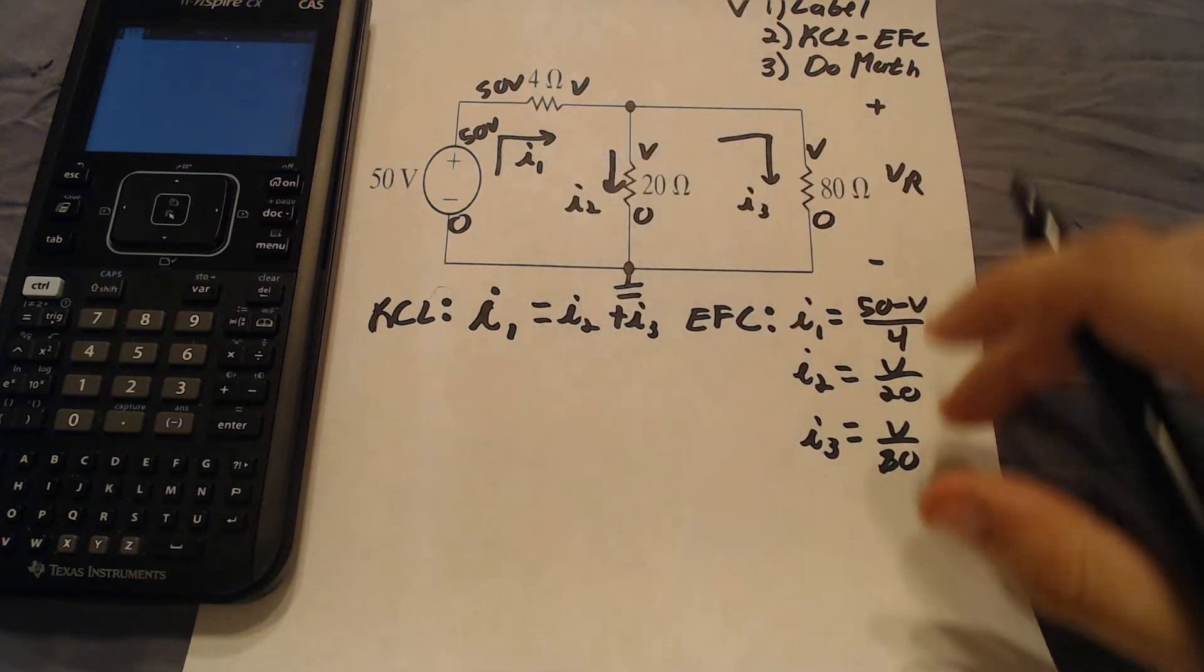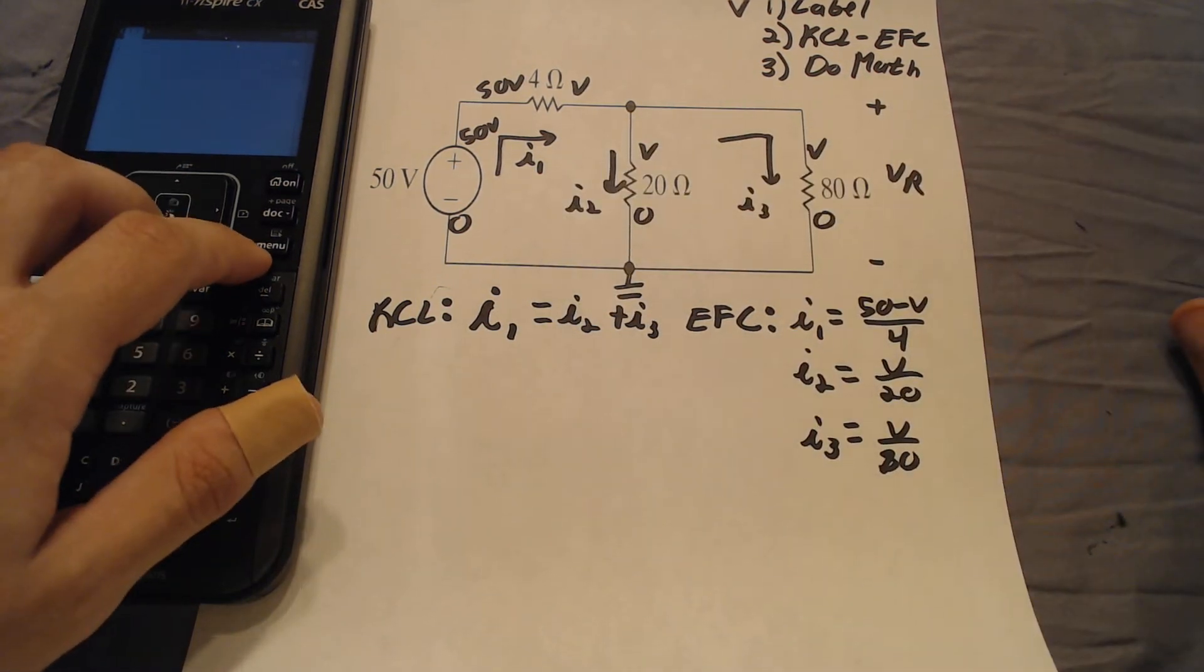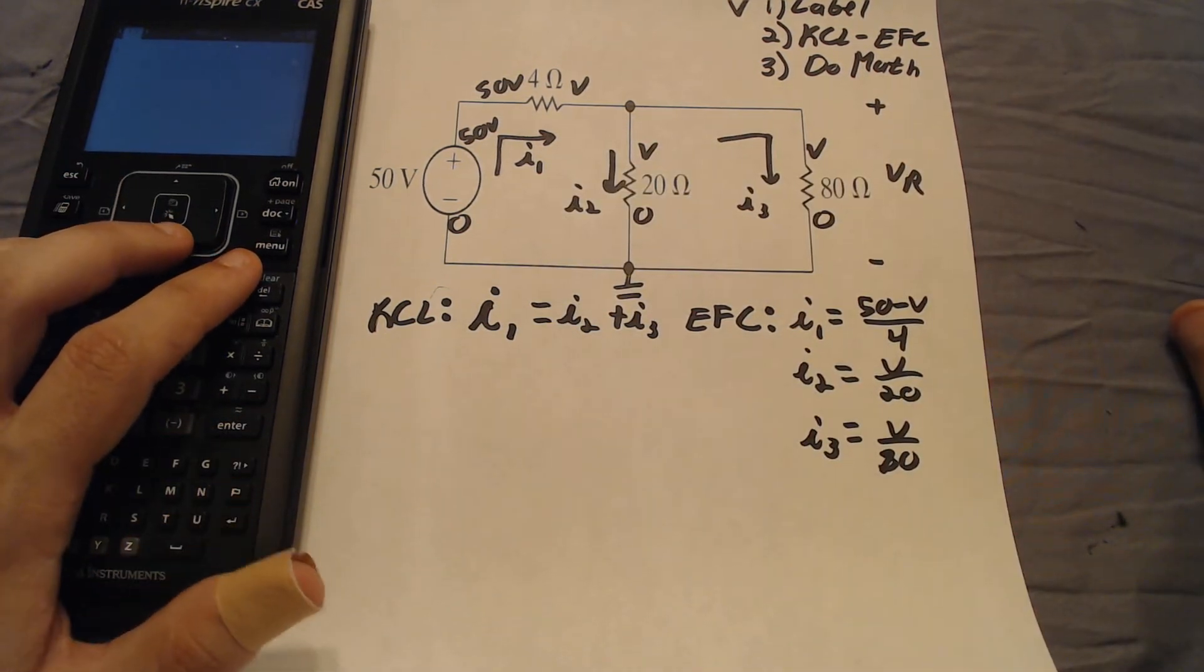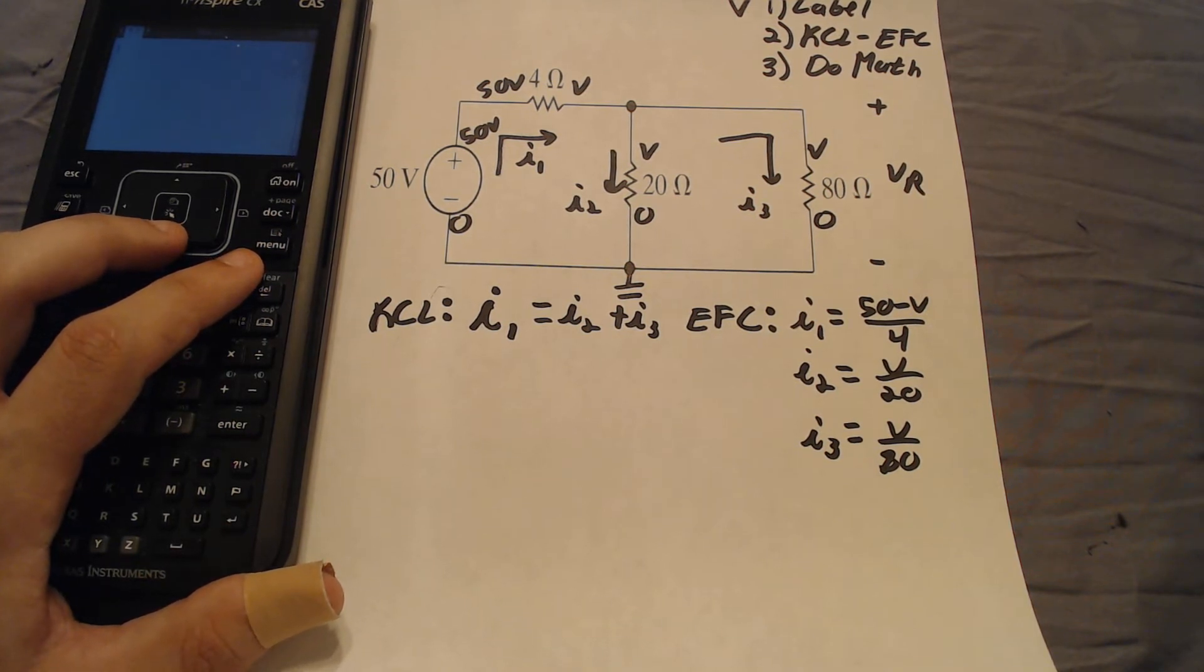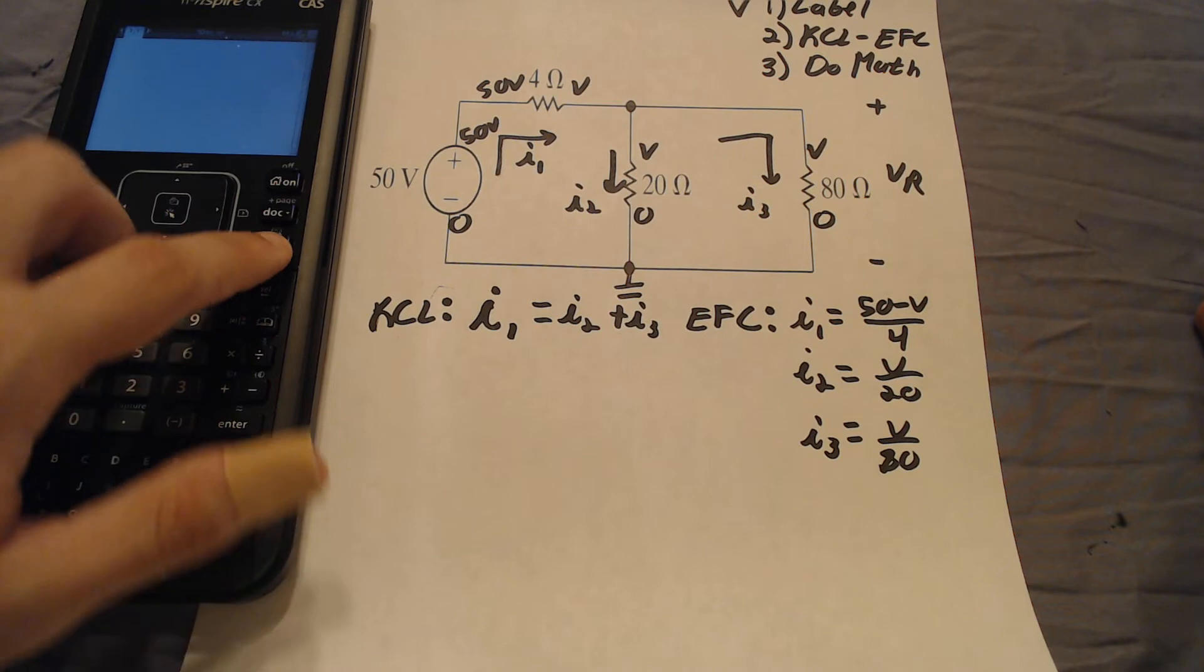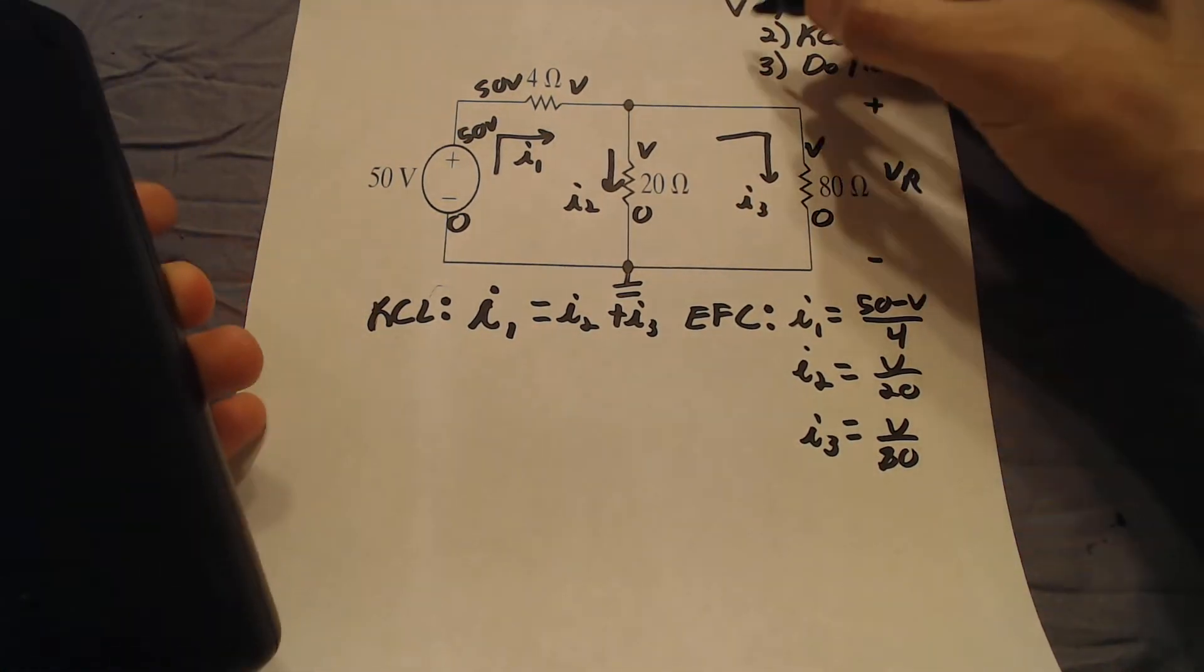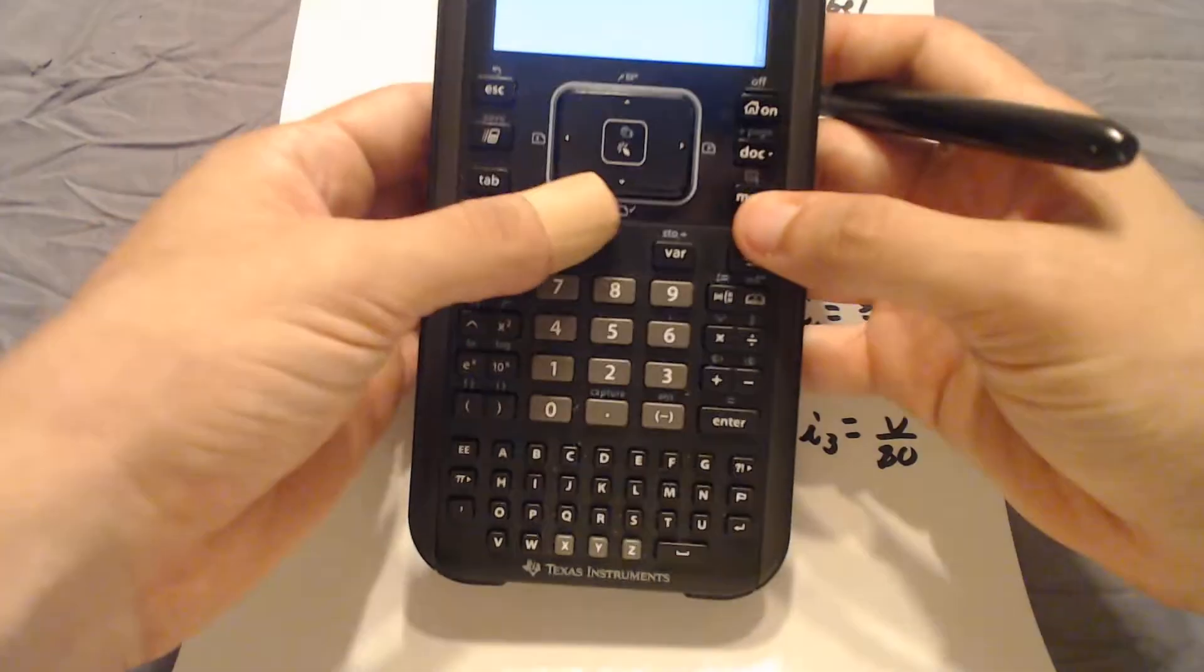So we have four equations and four unknowns. This means that we can do a system of equations to solve for every variable and get an actual numerical value instead of a relation between the variables. So now we move on to our TI-inspire.